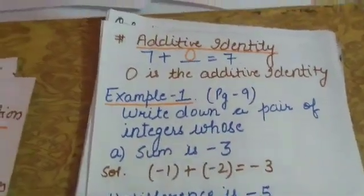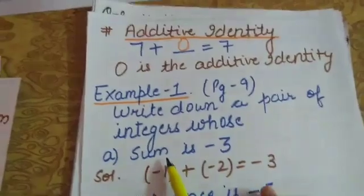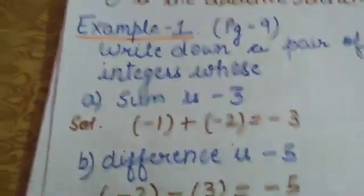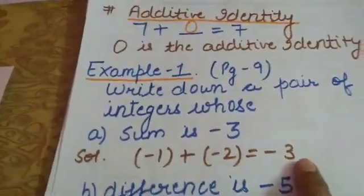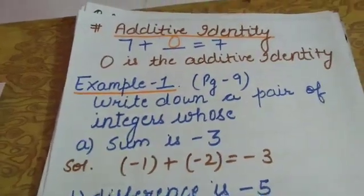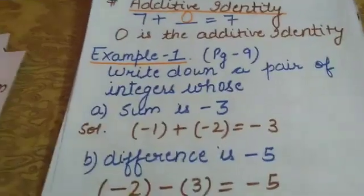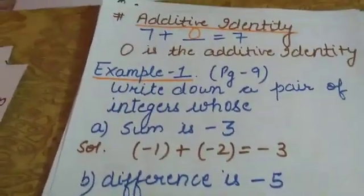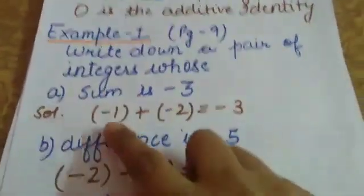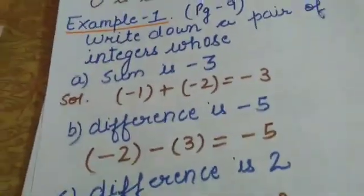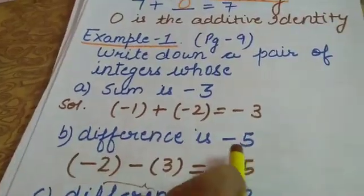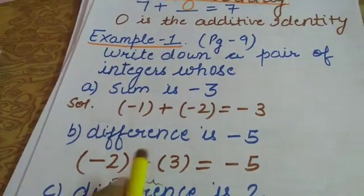Now let us discuss example number 1 from page 9. Part (a): write a pair of integers whose sum is minus 3. For example, minus 1 plus minus 2 gives minus 3. Another example: minus 5 plus 2 also gives minus 3. You can think of more examples yourself. Part (b): write a pair of integers whose difference is minus 5. I thought of minus 2 and plus 3 — if you subtract them you get minus 5.